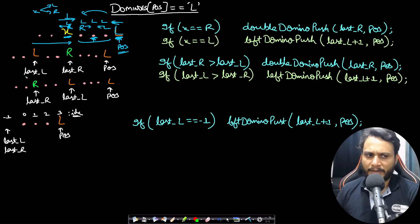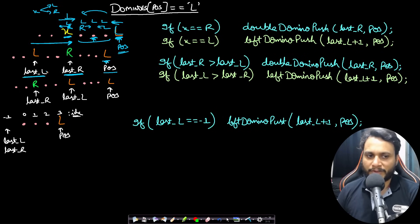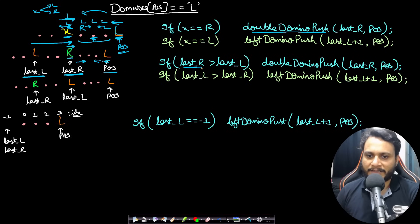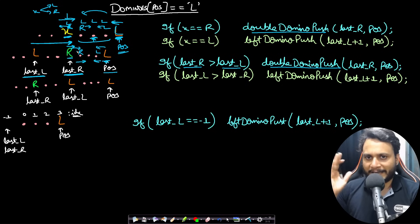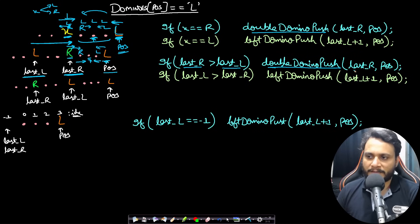We can track this by maintaining last_seen_L and last_seen_R positions while moving left to right. If we are currently looking at an L and last_R is greater than last_L, it means the nearest previously-seen forced domino was pushed right, so we call a double domino push. In a double domino push we push R from the left and L from the right simultaneously; if there is an odd number of dominoes in the middle one will be unaffected. We call double_domino_push(last_R, position).